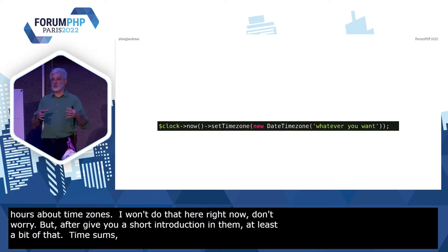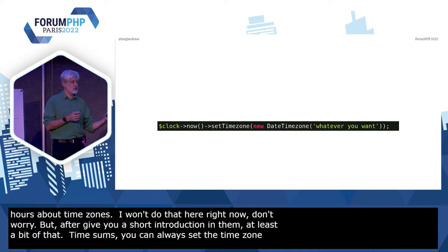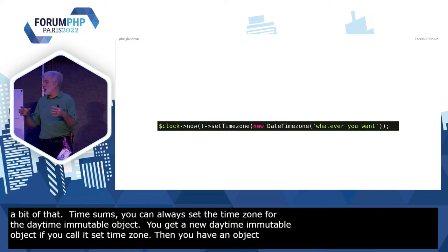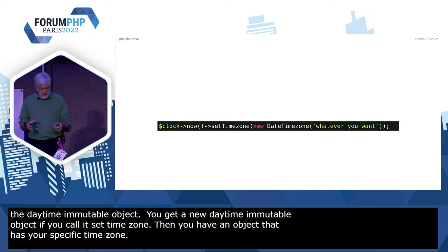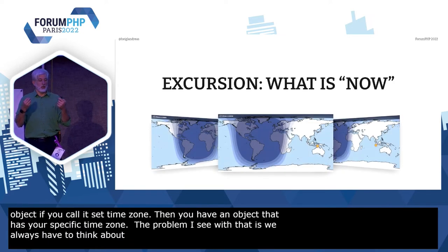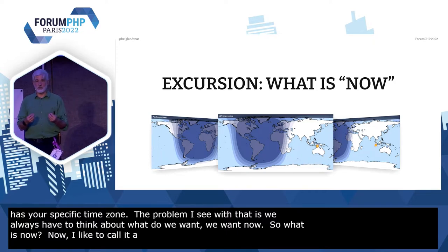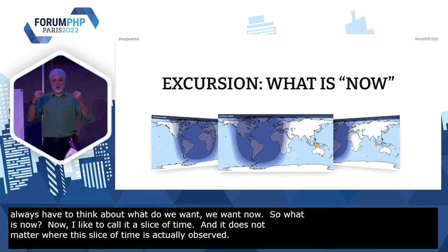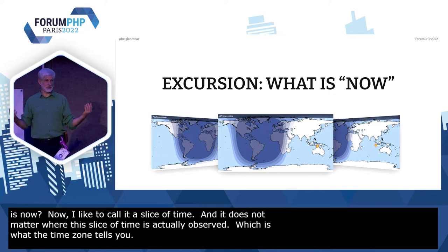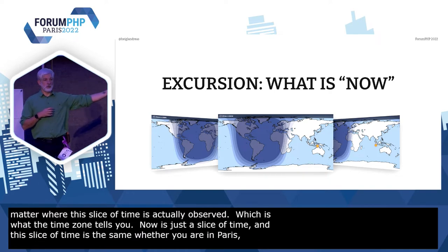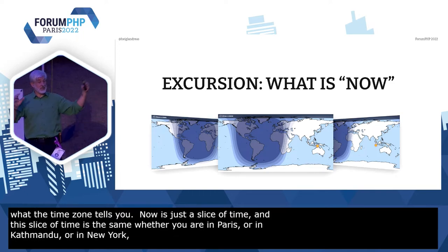You can always set the time zone for the DateTimeImmutable object — you get a new DateTimeImmutable object from that if you call `setTimezone`. But then you have an object with your specific time zone. The problem is we always have to think about what we want: we want now. So what is now? I like to call that a slice of time. And it doesn't matter where this slice of time is actually observed, which is what the time zone tells you. Now is just the slice of time, and this slice of time is the same whether you are in Paris, Kathmandu, New York, or even on Mars.